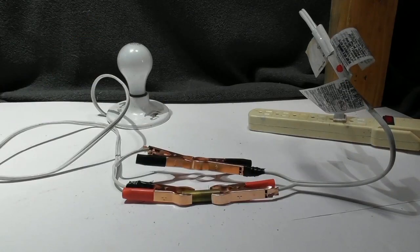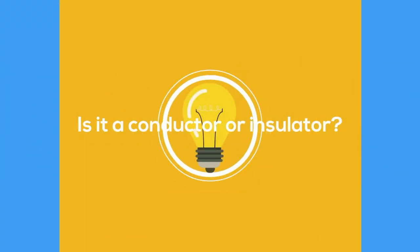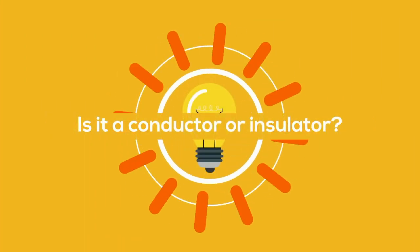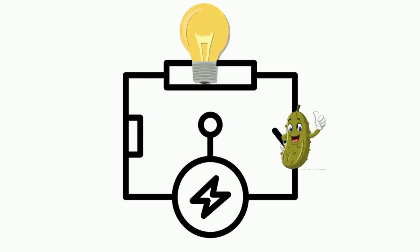We will hook it up to some electricity and see if it is a conductor or an insulator. Here's how I'm going to test if it's a conductor or an insulator. I have a simple circuit. The object I'm testing will complete the circuit. In this example, a pickle.